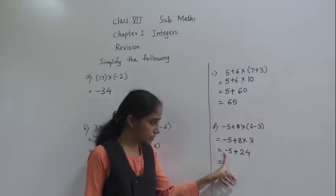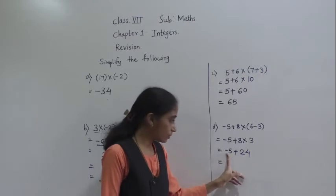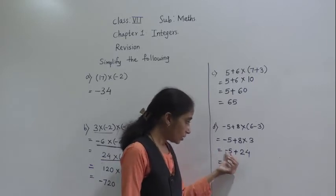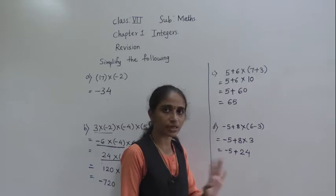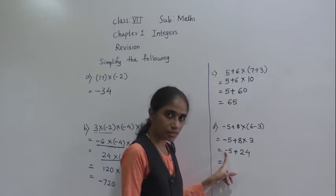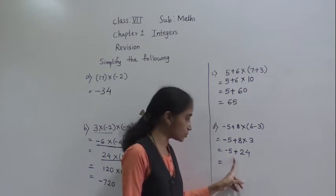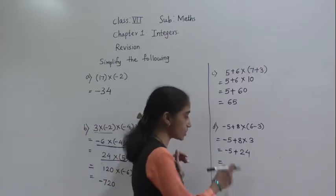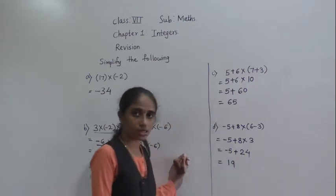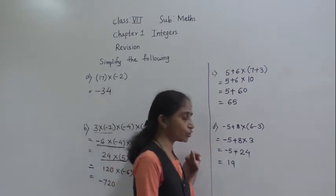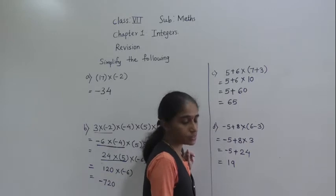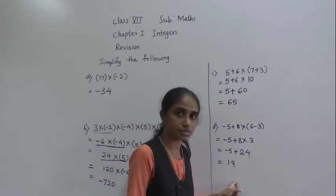Now if you observe, this number is negative and this number is positive. Minus 5 plus 24. This number minus and this number is plus — means this is negative, this is positive. So subtract 5 from 24. For the answer, the greater number's sign we have to give. 5 is greater or 24 is greater? 24 is greater, and 24 has a plus sign, so for the answer also plus sign. So the answer is 19.